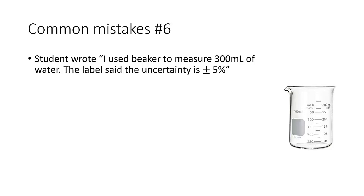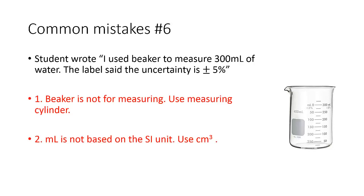Mistake number six: a student said they used a beaker for measuring 300 mL of water with a label uncertainty of ±5%. First, a beaker is not for measuring — a measuring cylinder is what you should use. The ±5% uncertainty is so large it makes your report unreliable. Second, mL is simply not the SI unit we use; you should never use it in any science IA. You should always use cm³.